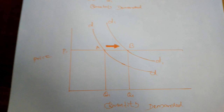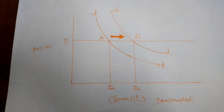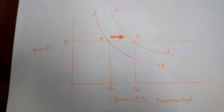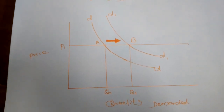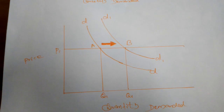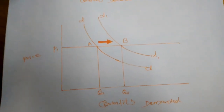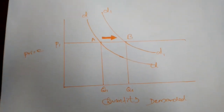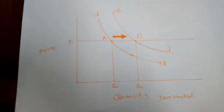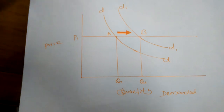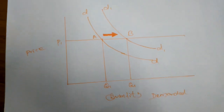We must understand the difference between the shift in demand curve and extension and contraction of demand. Extension and contraction of demand occurs only when quantity demanded changes due to a change in price alone. But a shift in the demand curve occurs when the price remains equal and other determinants of demand change.